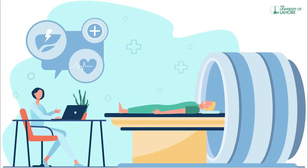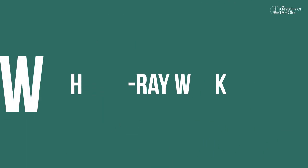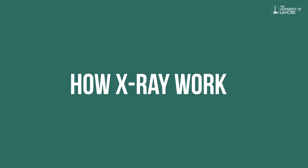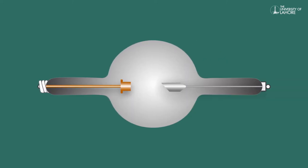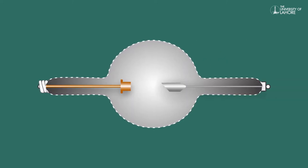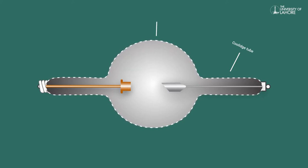X-rays are produced by the interaction of accelerated electrons with heavy metal. The common device in which X-rays are produced is called a Coolidge tube.